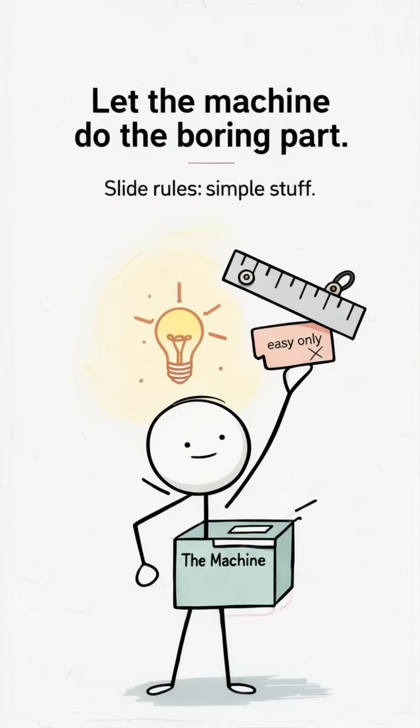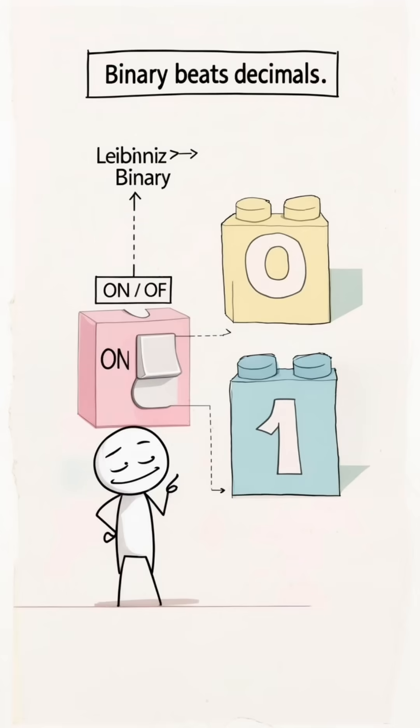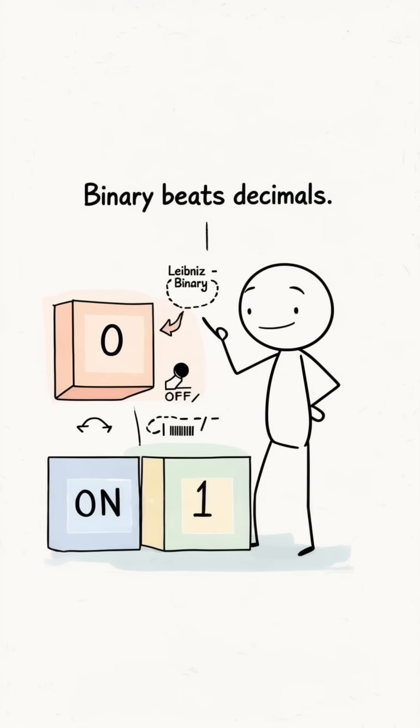Machine does the boring part. Slide rules helped, but only for easy problems. Zeus wants everything. Decimals are messy. So he grabs Leibniz's binary, zeros and ones, which nicely map to electricity's two moods, on slash off. Problem reduced.